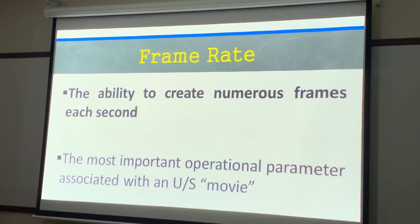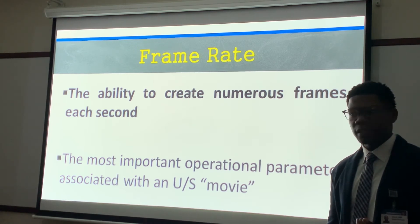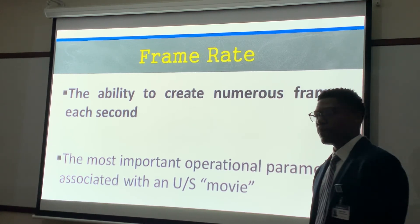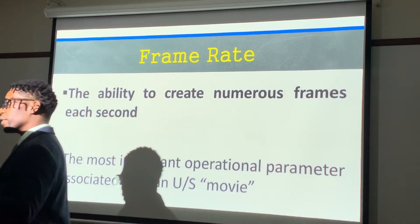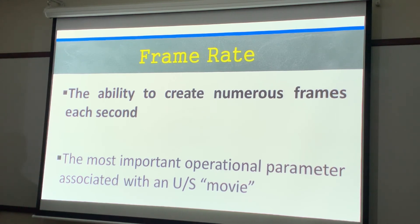Frame rate is the most important operational parameter associated with an ultrasound movie. If you need a movie, frame rate is very important. If you don't need a movie, detail is more important. There's always a trade-off between temporal resolution and detail resolution — lateral resolution. Adding more focal zones increases lateral resolution but decreases temporal resolution because it takes so much more time to create that image.